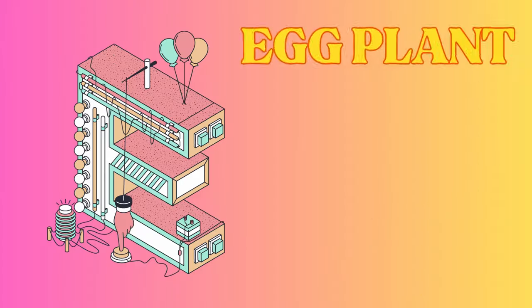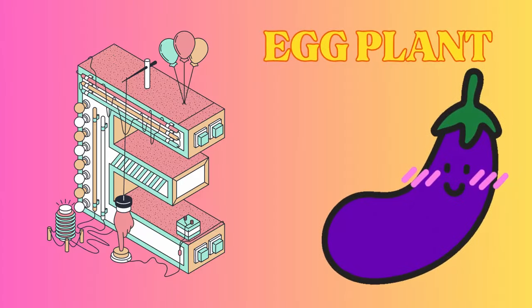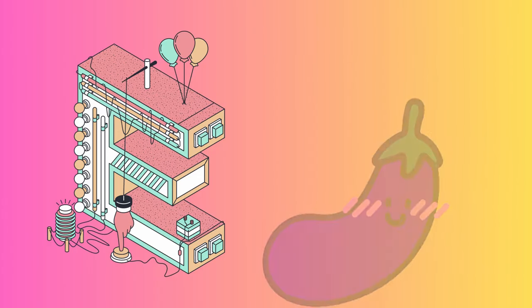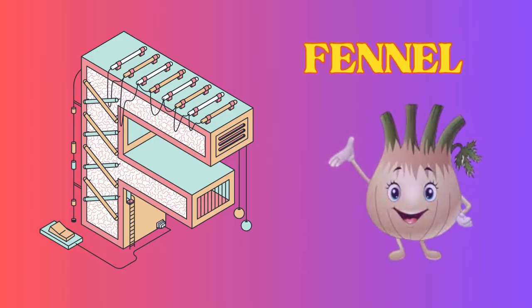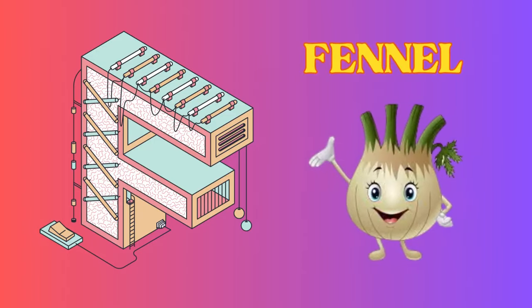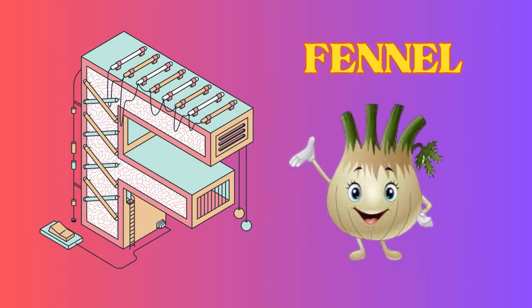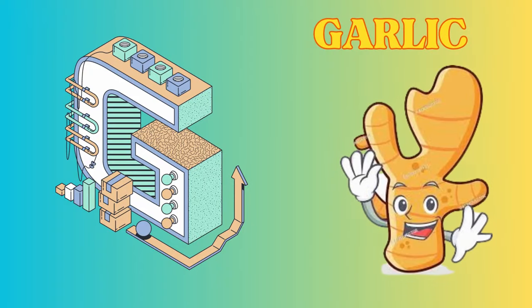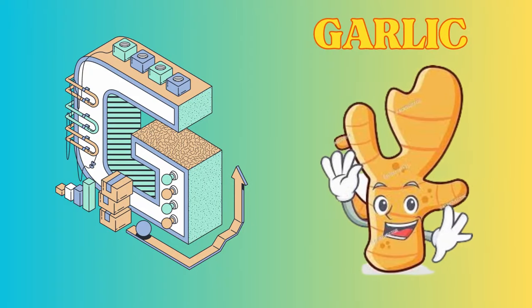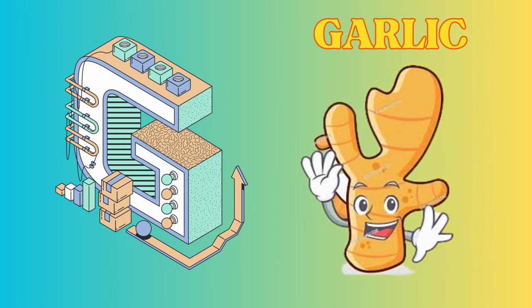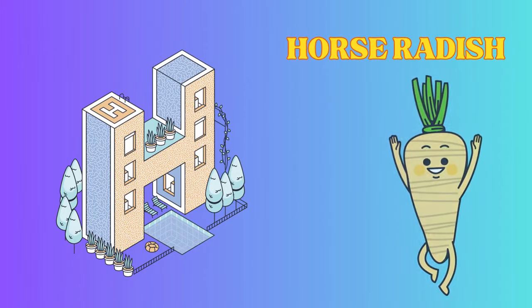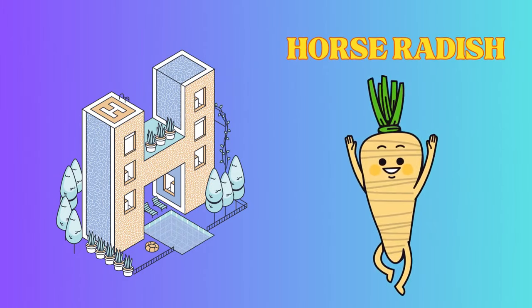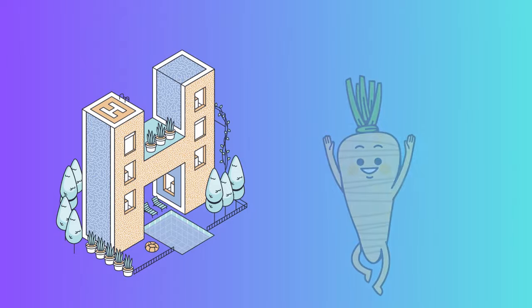E is for eggplant, eggplant. F is for fennel, fennel. G is for garlic, garlic. H is for horseradish, horseradish.